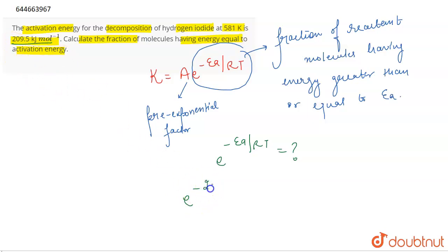convert it into joules. This will become 209,500. The value of R in joules is 8.314 joules per mole per Kelvin, and the temperature is 581. This will come out to be e to the power minus 43.4, and on solving, the value will be equal to